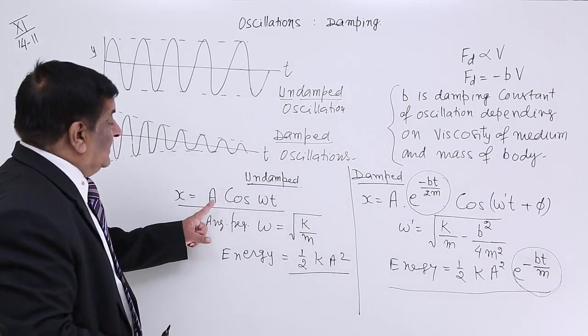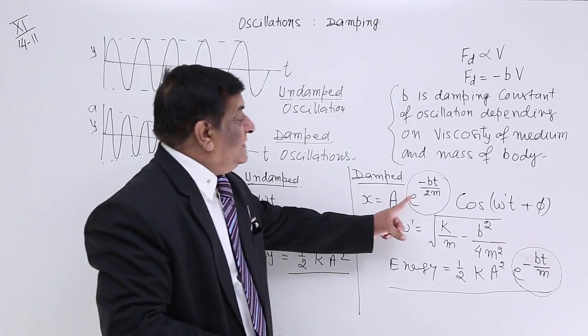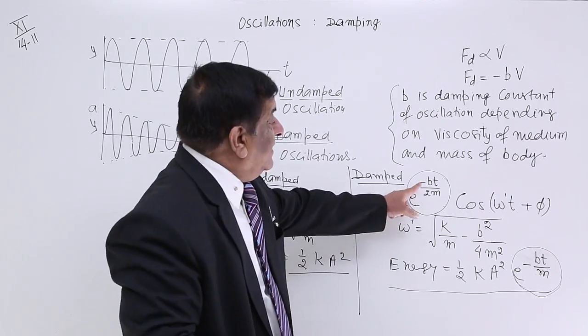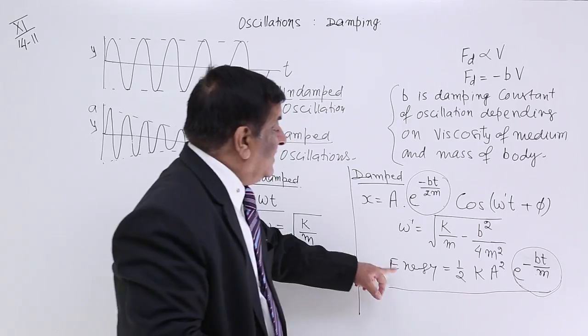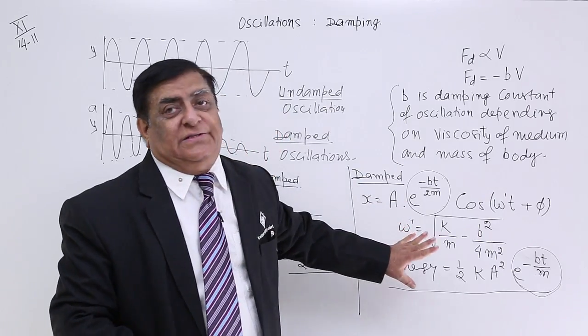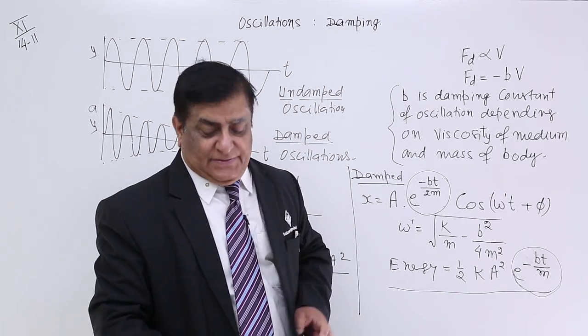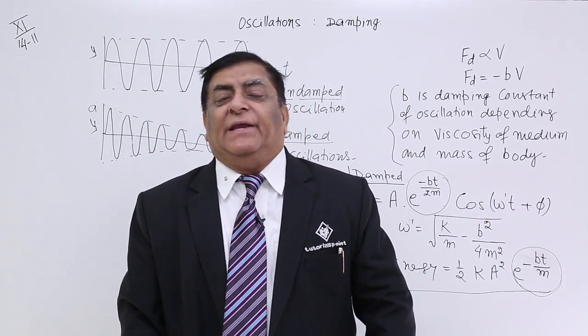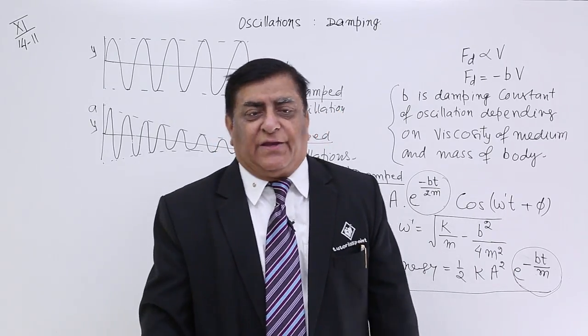So, in place of our equations of undamped we have to use these three equations for damped oscillation where damping constant is decreasing all these three quantities. These are damped oscillations. In the next lecture we will see what is the meaning of resonance and what are the oscillating forces. Thank you.